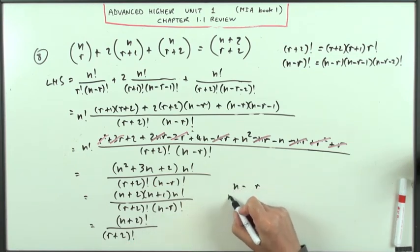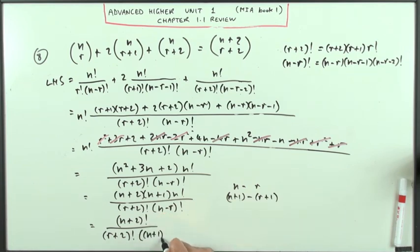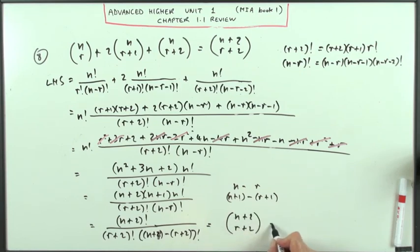If I've got n minus r, I could make it n plus one, as long as I do minus r plus one, because I've got a plus one minus one. So I could equally well just change that into n plus two minus r plus two factorial, it's the same thing. Which equals, just what that says, n plus two choose r plus two, which equals the right-hand side, thus demonstrating the identity algebraically.